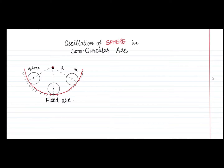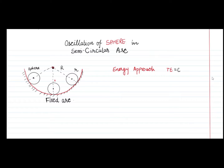The sphere is oscillating and we consider the mean position of the sphere. I want to derive the equation of motion and for that I am going to apply the energy approach. In the energy approach we consider the system at any instant of time, write the total energy, and based on the principle of conservation of energy we say the total energy will be a constant. When the system is at the lowest position the total energy is kinetic energy, taking that as the datum position where potential energy is zero. At the extreme positions the total energy is potential energy, and in between, potential energy is converted into kinetic energy.